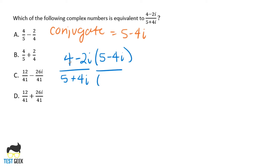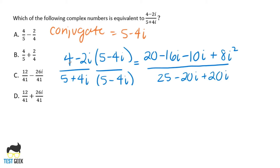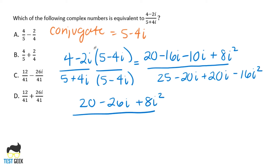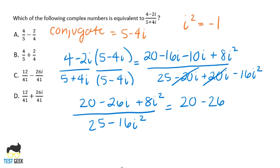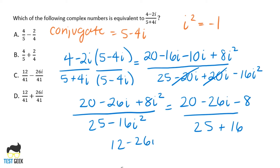Let's multiply these out now using our FOIL method. On the top, we can combine like terms — negative 16i and negative 10i — and we get 20 minus 26i plus 8i squared. On the bottom, we can cancel out the two middle terms — and this is the magic of multiplying by the conjugate of the denominator. Those terms cancel out and we get 25 minus 16i squared. Now, i squared equals negative one, so let's replace all i squareds with negative one. On the top we get 20 minus 26i minus 8, and on the bottom 25 plus 16. Combining like terms gives us 12 minus 26i all over 41.